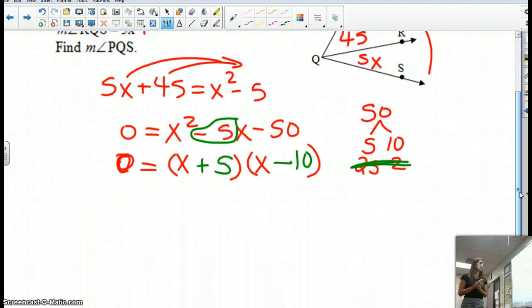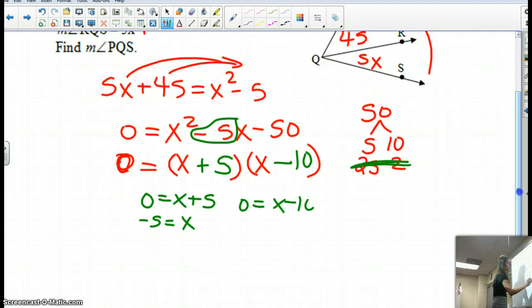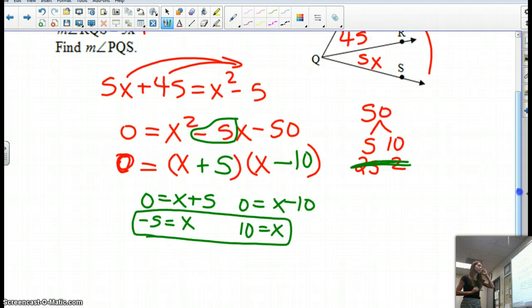The last step to solving a factoring problem, how to get x, is to set them both equal to 0. So 0 equals x plus 5, negative 5 equals x. 0 equals x minus 10, add 10 to both sides, 10 equals x. So we've got two answers: x equals 10 and x equals negative 5.